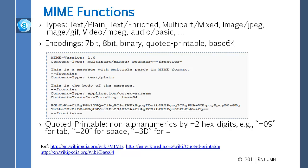MIME allows many types of encoding: 7-bit, 8-bit, binary, quoted printable, and Base64. These are all different coding schemes.